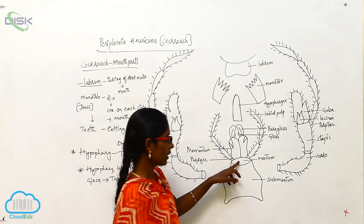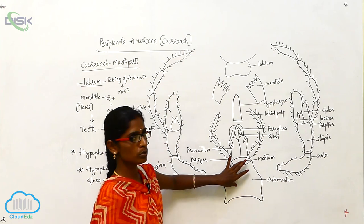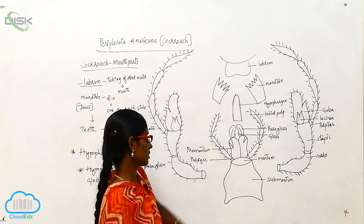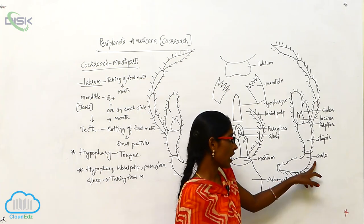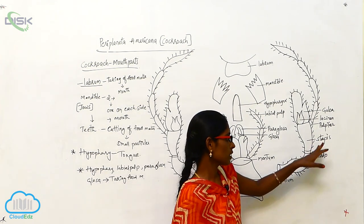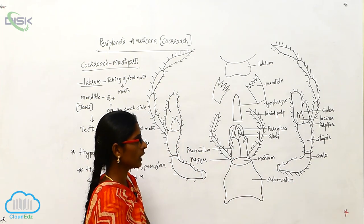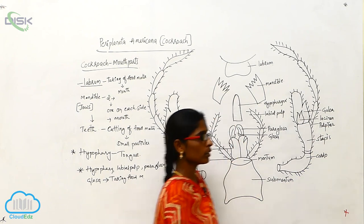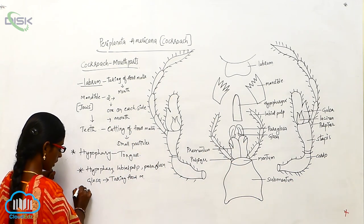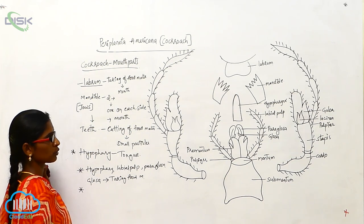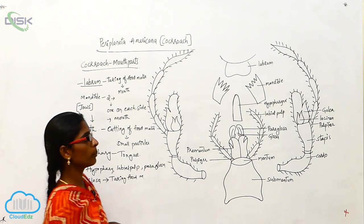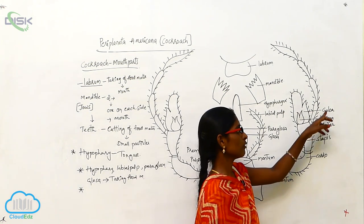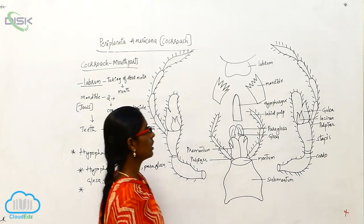The mentum and submentum are used as the base of these organs. The cardo and stipes are used for taking food material into the mouth. If food material goes outside, these structures help protect and retain the food material inside the mouth.